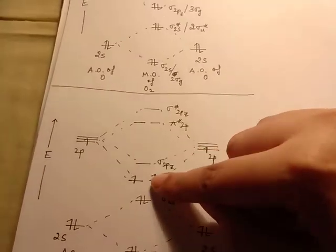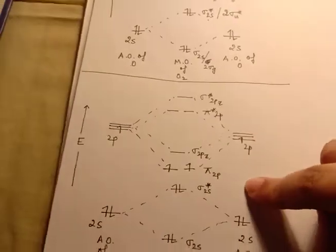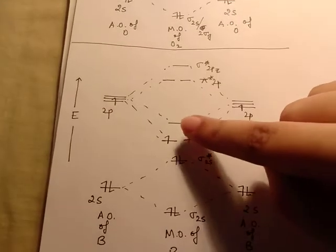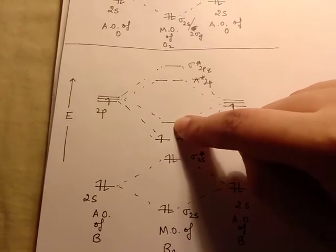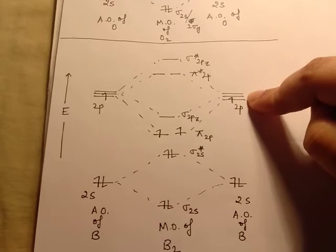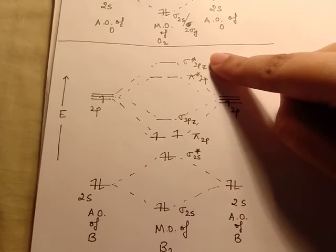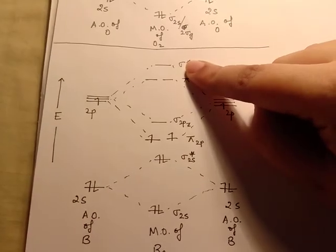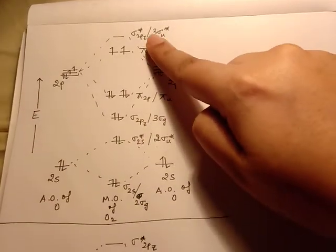Again, how do we know this is the correct energy level diagram for boron? We know because this molecule is found to be paramagnetic. If this ordering were different — if the sigma were below the pi — then the 2 electrons would have been paired up and the molecule would have been diamagnetic, not paramagnetic. So till nitrogen this is the order of energy levels for the molecular orbitals, and from oxygen onwards this is the order of molecular orbitals.